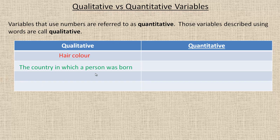The country in which a person was born is a qualitative variable. You were born in Canada or the United States or England or Russia, but it's non-numerical. It's a certain place. A person's gender is also a qualitative variable.